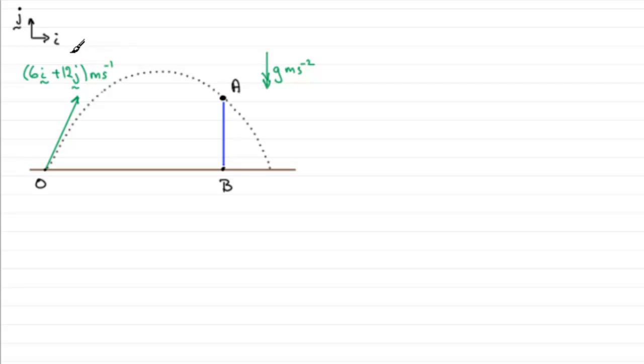And we're told that this ball passes through a point A at a time t seconds. Let's just mark in that the time that it passes through there is at t seconds. And the point B is a point on this horizontal plane vertically below A, in such a way that the distance OB equals twice the distance AB. And we've got to find the value of t. Now you'll notice that I've marked in the acceleration due to gravity as well, that acts vertically downwards.